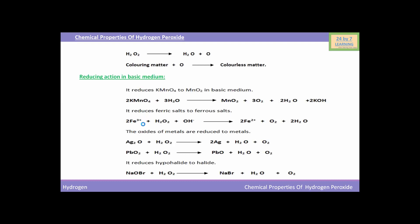You can see the reaction below. Fe³⁺ (ferric ion) when reacted with H₂O₂ (hydrogen peroxide) in basic medium — where the hydroxyl ion indicates the basic medium — will yield Fe²⁺ (ferrous ion). Also in basic medium, due to the reducing action of hydrogen peroxide, oxides of metals are reduced to metals. Ag₂O (silver oxide) when reacted with H₂O₂ will yield Ag (silver metal).